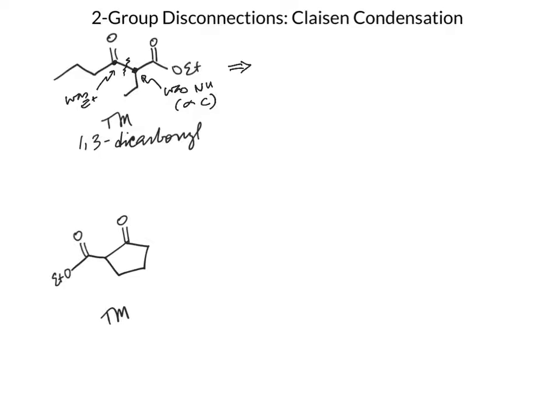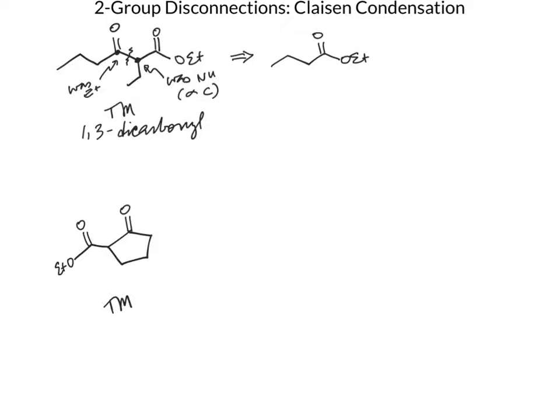How do we make that carbon electrophilic while still maintaining a carbonyl? What I have to put on here is a leaving group. So if I use an ester as my electrophile, that's going to give us a carbonyl after the nucleophile does an addition and then elimination — in other words, an acyl substitution.